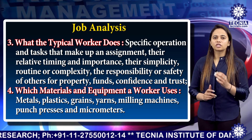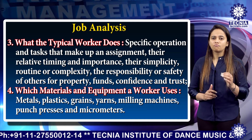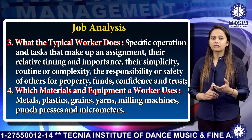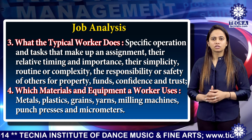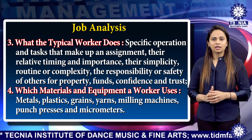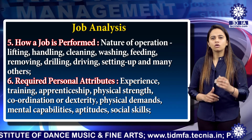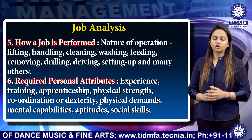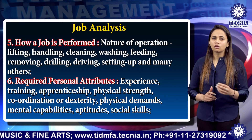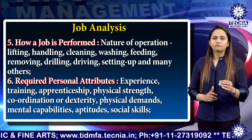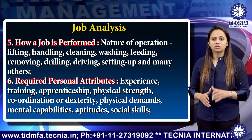Number four, which materials and equipment a worker uses — metals, plastics, grains, machines, punch and micrometers. Number five, how a job is performed — nature of operation such as lifting, handling, cleaning, washing, feeding, drilling, driving, setting up and many others.